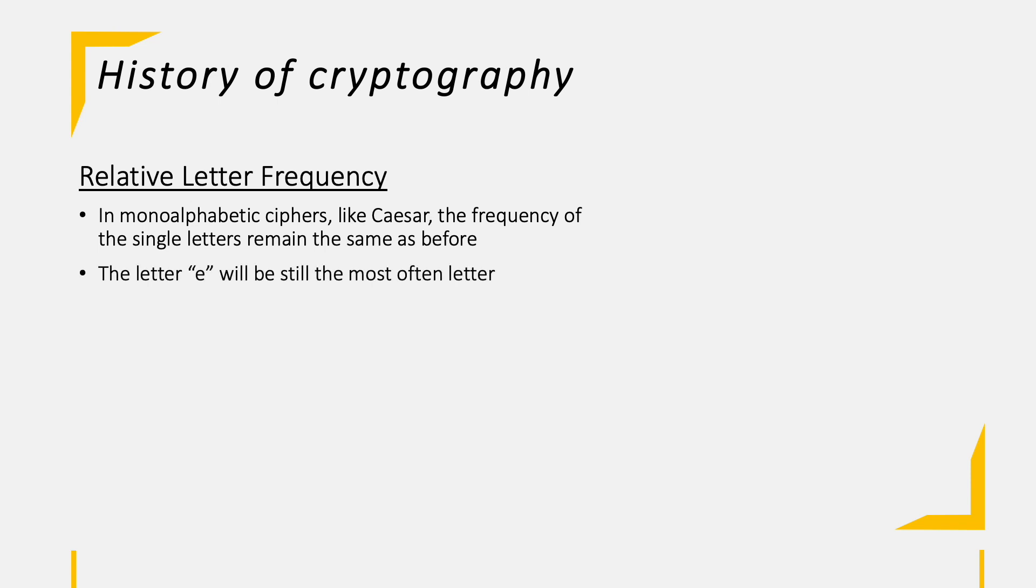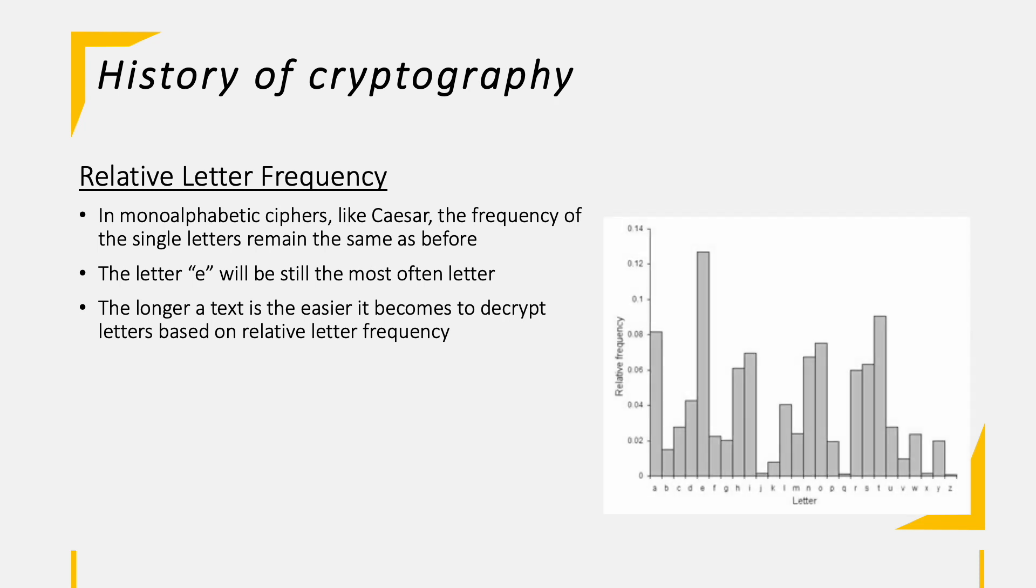In English text, the letter E will be still the most often letter and the longer the text is, the easier it becomes to decrypt the letters based on the relative letter frequency. In the chart on the right hand side, you see the letter frequency of the English alphabet in percentage, demonstrating very strong trends.